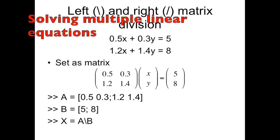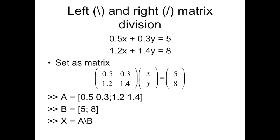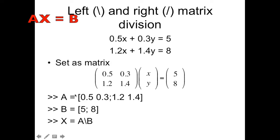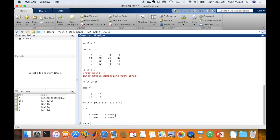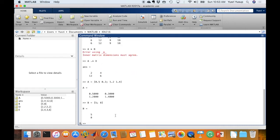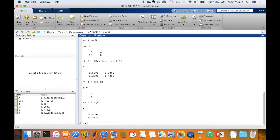As an example, say you have two equations with two unknowns, x and y. Written in matrix notation, the coefficient matrix is A with elements 0.5, 1.2, 0.3, 1.4, and the results matrix is B with values 5 and 8. To solve for x and y, you use the left division: x equals A backslash B. This gives you the values of x and y, solving those two linear equations simultaneously.